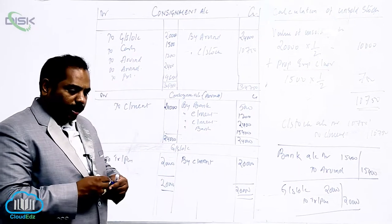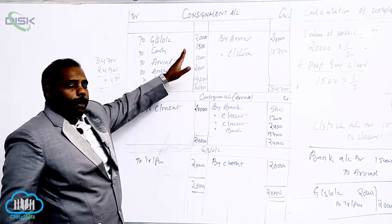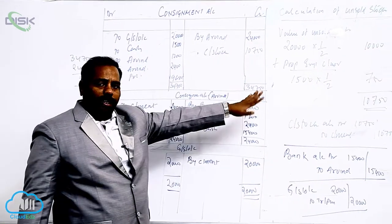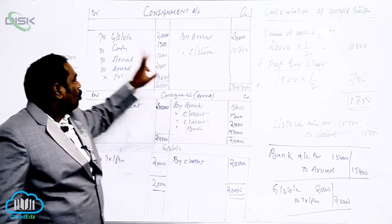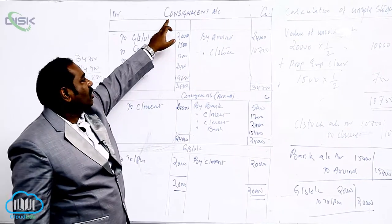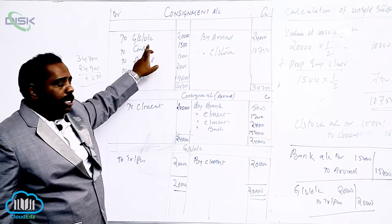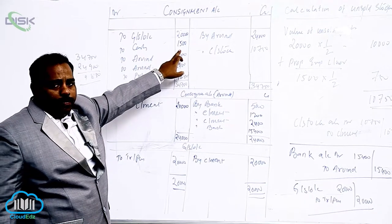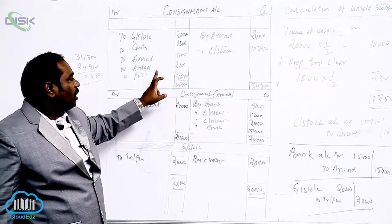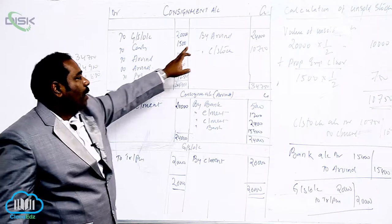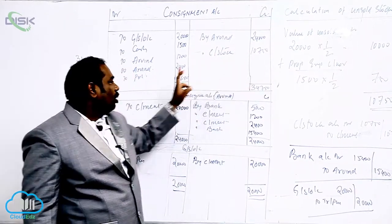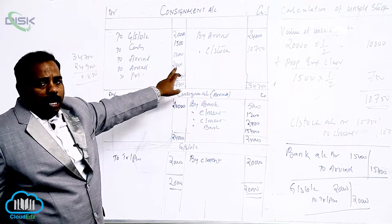So the shortcut method is: prepare the ledger and write the journal entry by seeing the ledger. To goods sent on consignment is for sending the goods, so the entry is consignment to goods sent on consignment. To cash is for expenses met by consignment. To consignment is for expenses met by consignment. By consignment is for sales. By consignment stock is for unsold stock. To consignment is for commission.